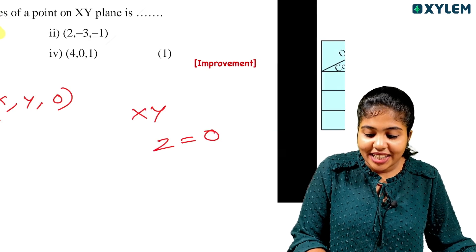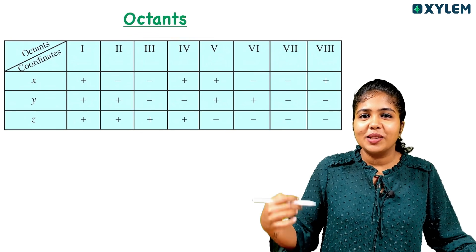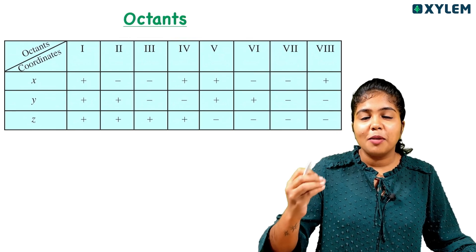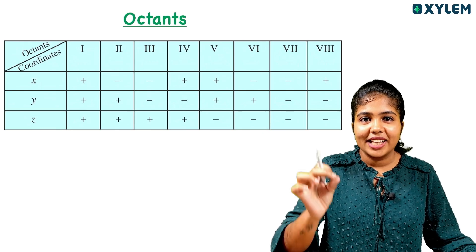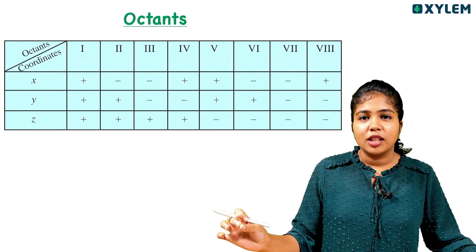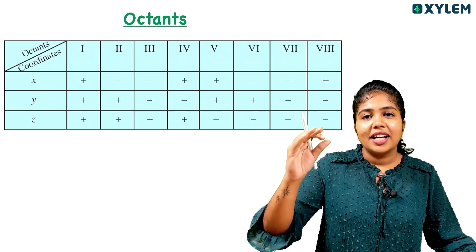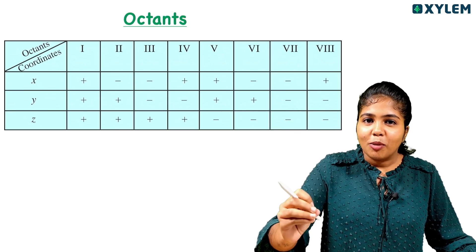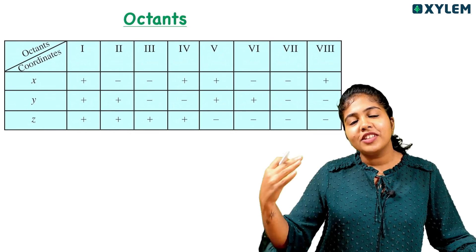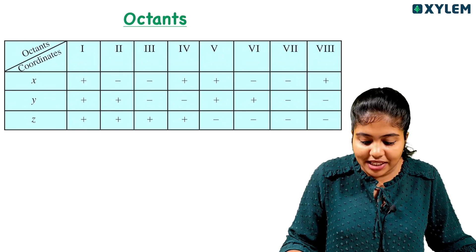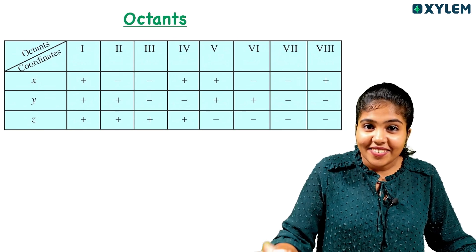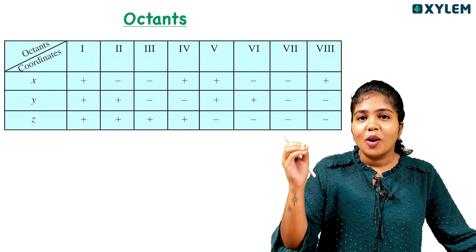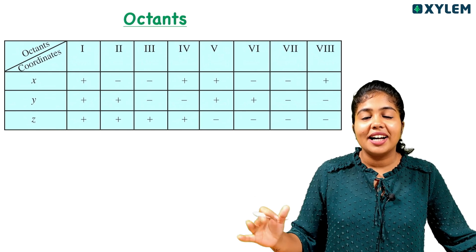Next topic: octants. You might be confused — it's a difficult topic. But in two-dimensional geometry, we have 4 quadrants: first quadrant, second quadrant, third quadrant, fourth quadrant. In the first quadrant, X and Y are positive. In the second quadrant, X is negative, Y is positive. In 3D geometry, instead of quadrants, we have octants.